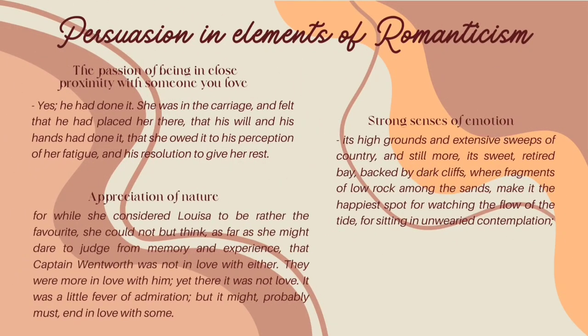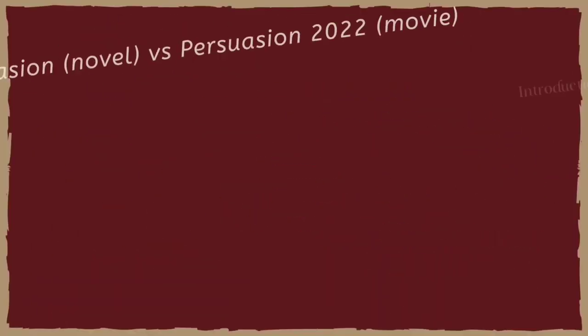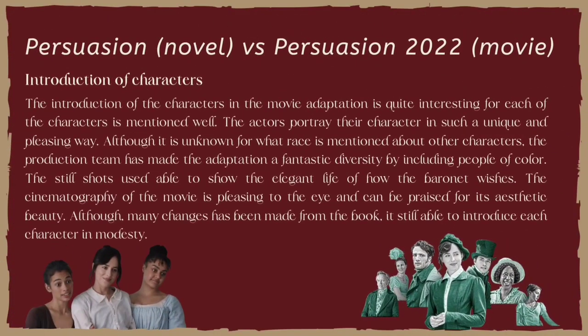The three elements of Romanticism in Persuasion that I found are: the passion of being in close proximity with someone you love, strong senses of emotion, and appreciation of nature. The theme of the novel is the reconciliation of broken love due to persuasion and giving a second chance to the person you love. The subjects are love, family, and friendship. I have chosen to compare the Persuasion novel with the adaptation of the latest movie, Persuasion 2022.